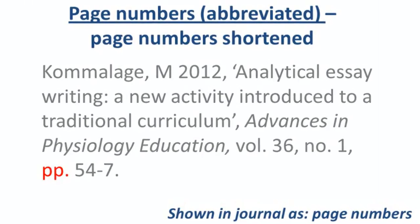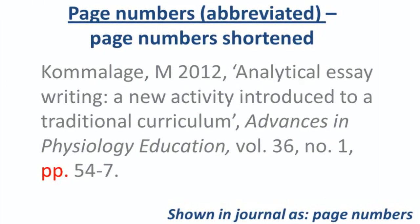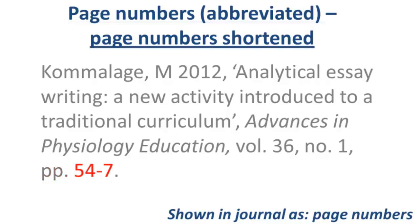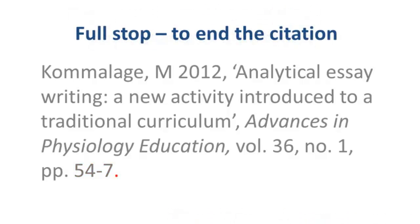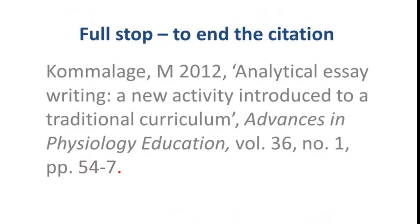Page number. Start with the PP abbreviation. Include the start and end page of the article separated by a dash. You will need to shorten the number of the end page. This is followed by a full stop.